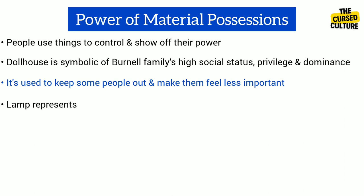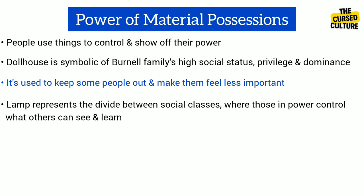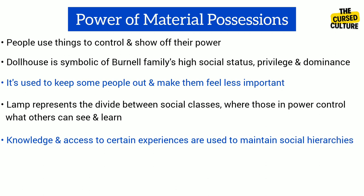Another example is the lamp, which represents the divide between social classes, where those in power control what others can see and learn. It suggests how knowledge and access to certain experiences are used to maintain social hierarchies. At the mention of the lamp, the Kelvies are drawn to the dollhouse. The lamp represents their desire to be part of something bigger and to learn about the world beyond their own. Later, when the Kelvies want to see the dollhouse, Aunt Beryl shoos them away, denying them this experience. Nonetheless, afterwards, Els Kelvy declares, 'I seen the little lamp.' This act symbolizes the power of the upper class to control access to knowledge and opportunities, keeping it from the lower class.